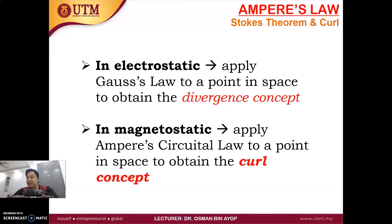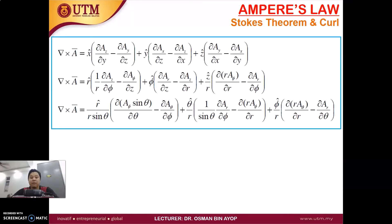In Magnetostatic, we apply the Ampere's Circuit Law to a point in space to obtain the curl concept. This is a little bit different. This is a table of curl for three different coordinate systems. We have Cartesian, we have cylindrical, and also the spherical coordinates. This is all the elements involved for Stoke.